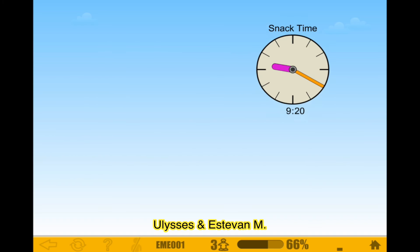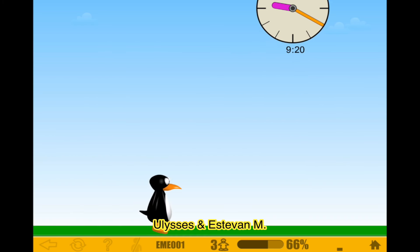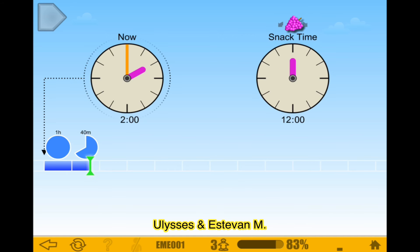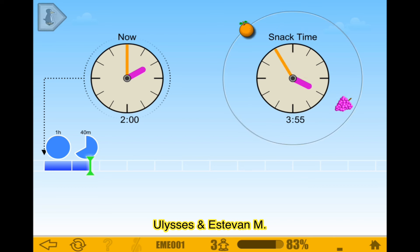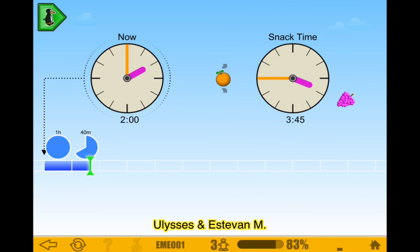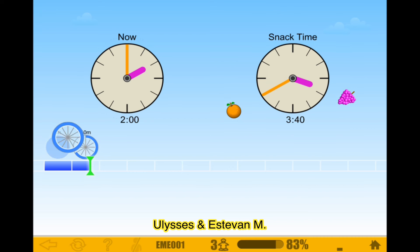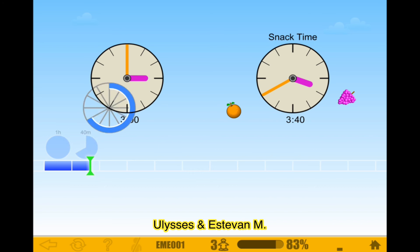It's the purple monster and the orange monster — they eat different food. One eats grapes and the other eats orange. So 1 hour, 3 o'clock, and then we have 40 minutes. It's orange. 3:40. There we go.